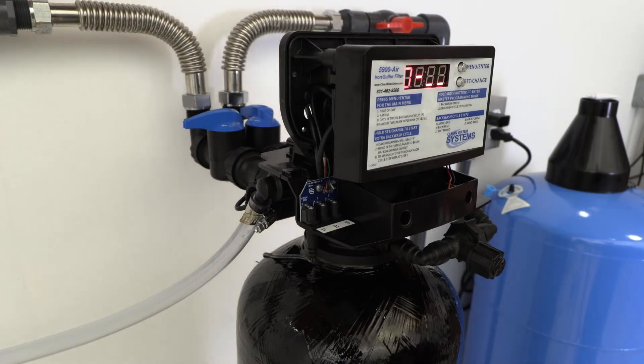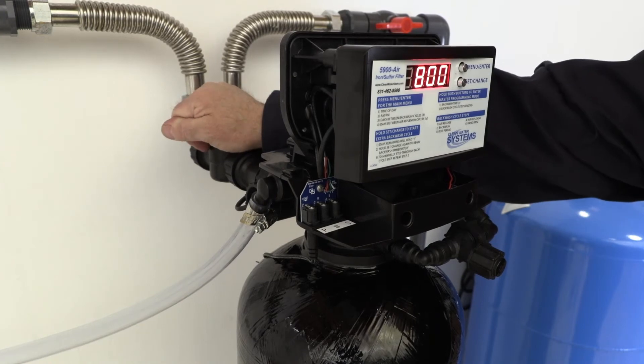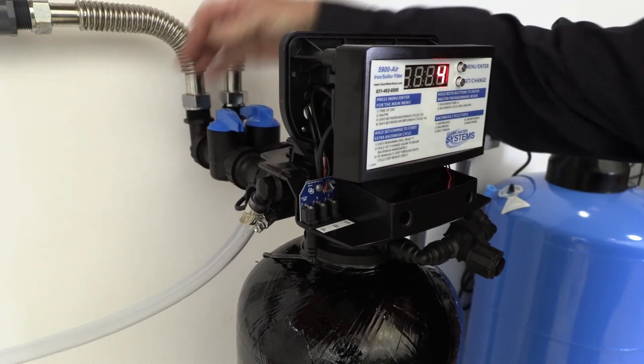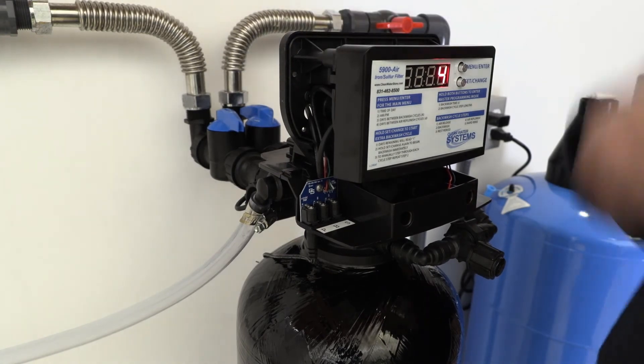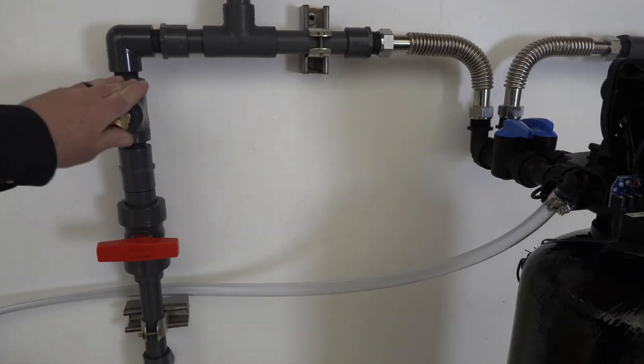Now we want to open the outlet valve on the bypass valve, and we're bringing pressure up through the system over to the hose bib. That's why we wanted to install the hose bib.